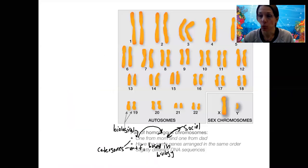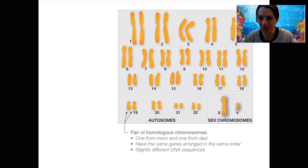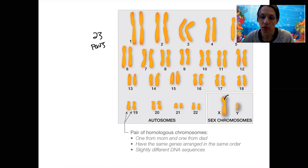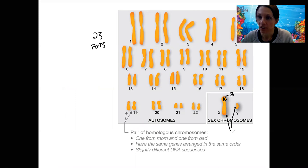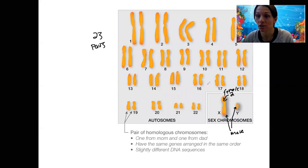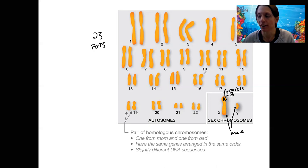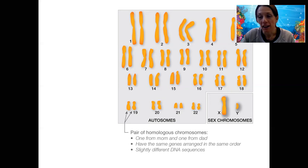A little bit of terminology: humans have 23 pairs of chromosomes. Different species have different numbers, and one of these pairs are sex chromosomes. Females have two X chromosomes (XX), and males have one of each — X and Y. All the other chromosomes are super important; they have tons of genes on them which become proteins and have many important functions. Each of your cells contains these chromosomes, and your cells divide as you grow — that's called mitosis.